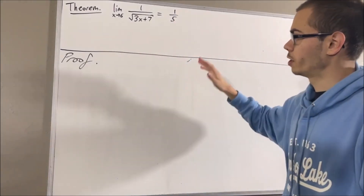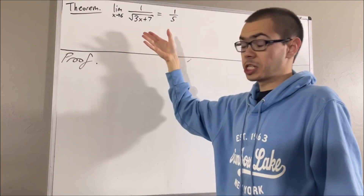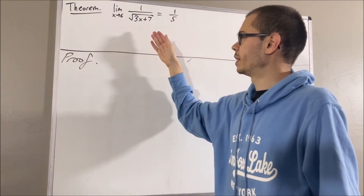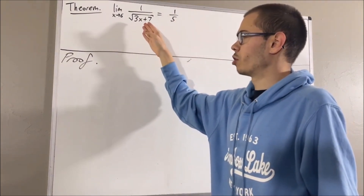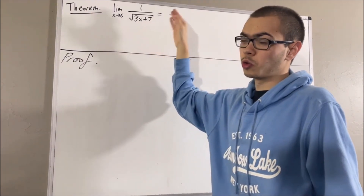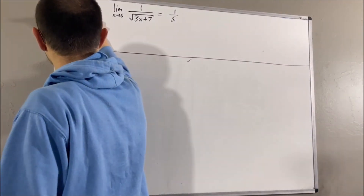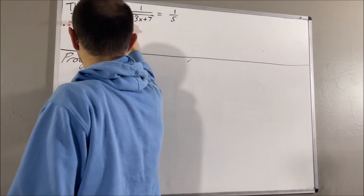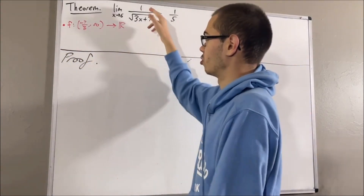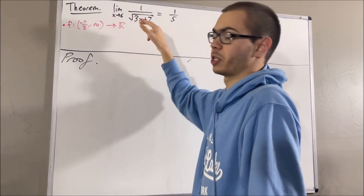Now really, we're dealing with the limit of a function. Which function exactly? Well, notice the domain of our function is going to be all real numbers greater than negative 7 thirds, and it's defined by the formula f of x equals 1 over the square root of 3x plus 7.